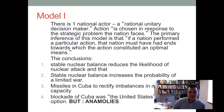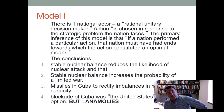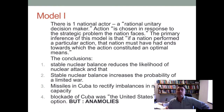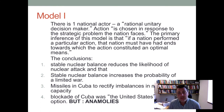Looking at the first model — the rational actor model — action is chosen in response to strategic problems the nation faces. If a nation performed a particular action, that nation must have had ends toward which the action constituted an optimal means. Applied to the nuclear missile crisis: a stable nuclear balance reduces the likelihood of nuclear attack, and a stable nuclear balance increases the probability of a limited war.